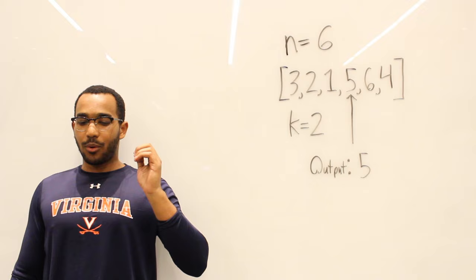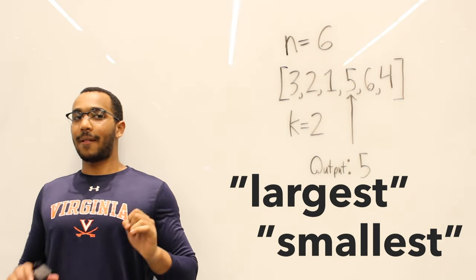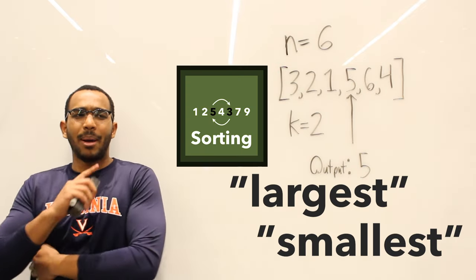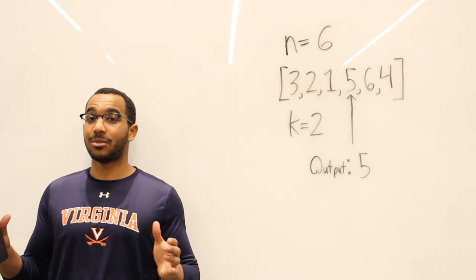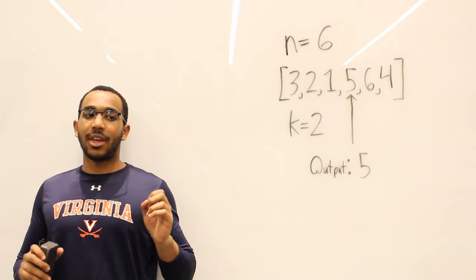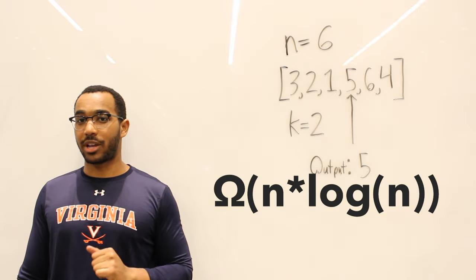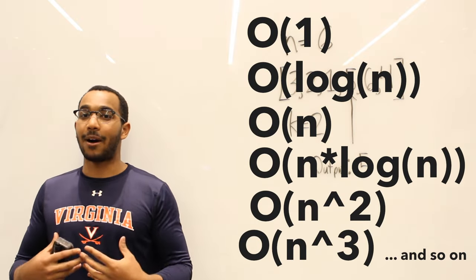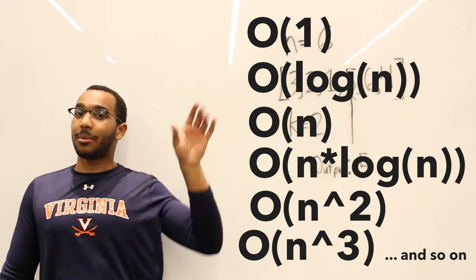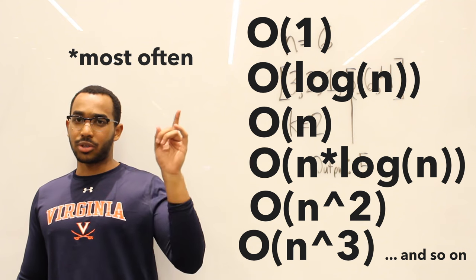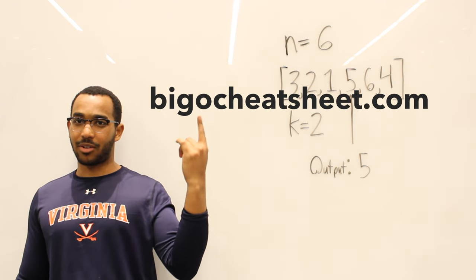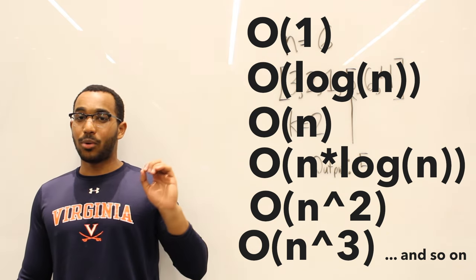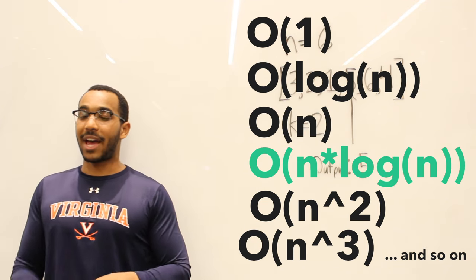If we're dealing with the largest or smallest of something and we want to find those kinds of values, we immediately think of sorting. If we have an array of items and we know nothing about them, the lower bound is n log n. So if I do any type of sorting, I'm going to fall right there — n log n. That is where I start.